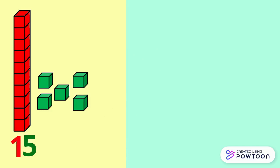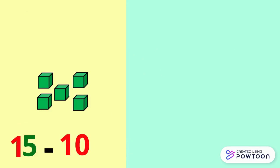One ten and five ones make fifteen. Take away one ten, we still have five.